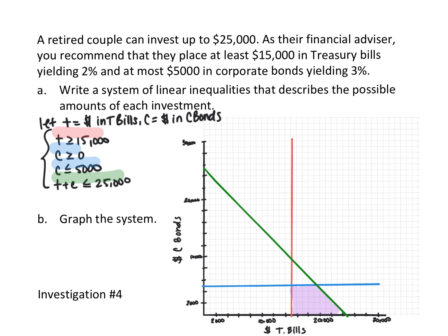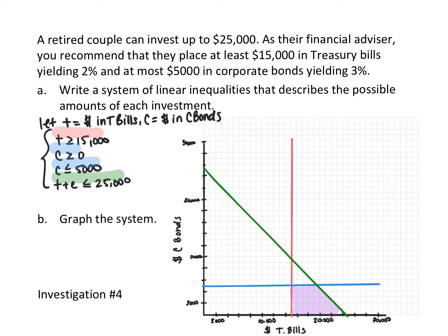Here's our solution graphed. T must be greater than or equal to $15,000; C must be greater than zero but less than $5,000; and T plus C must be less than or equal to $25,000. The purple shaded area is our solution to the system of inequalities.